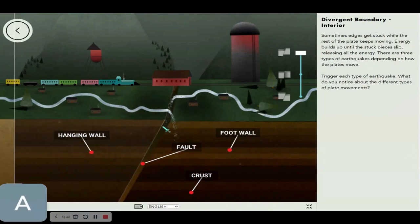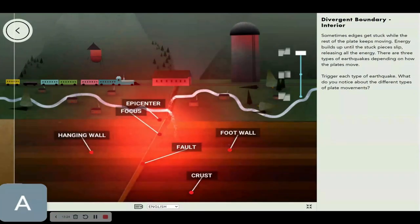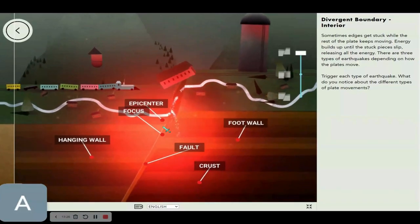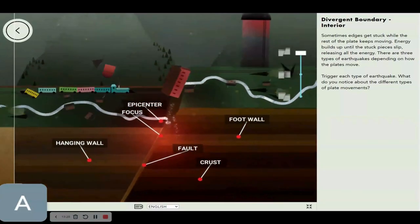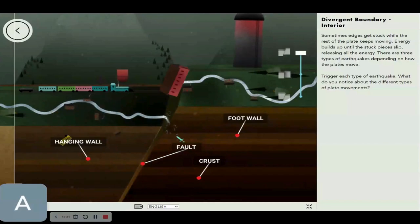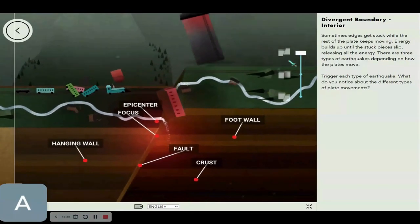Let's check out what happens inside a divergent boundary. Generate enough energy and you can do things like this. Now check this out, one of the plates goes downwards while the other goes inwards.